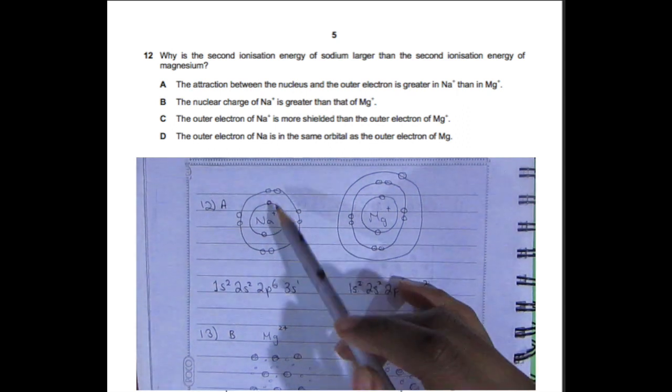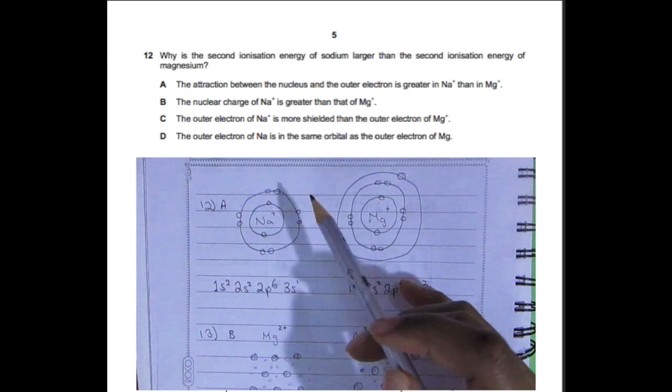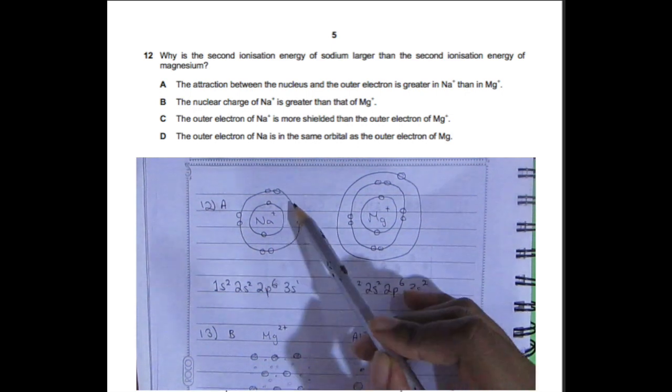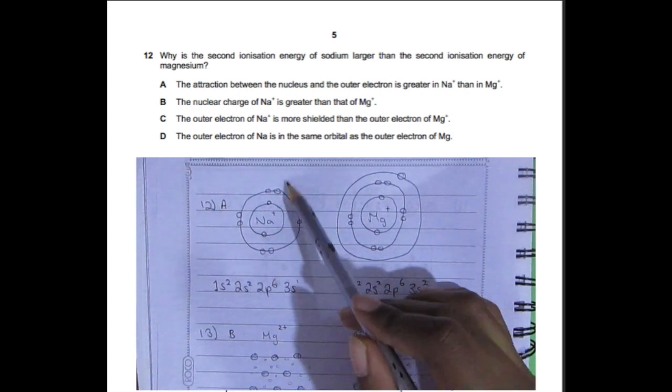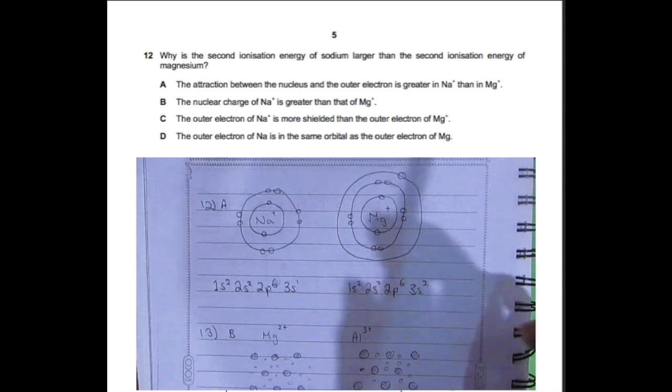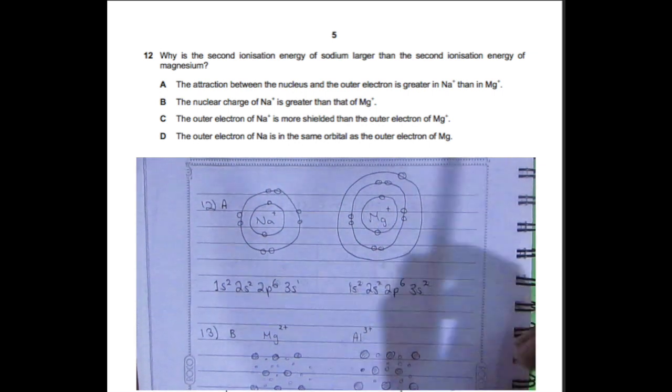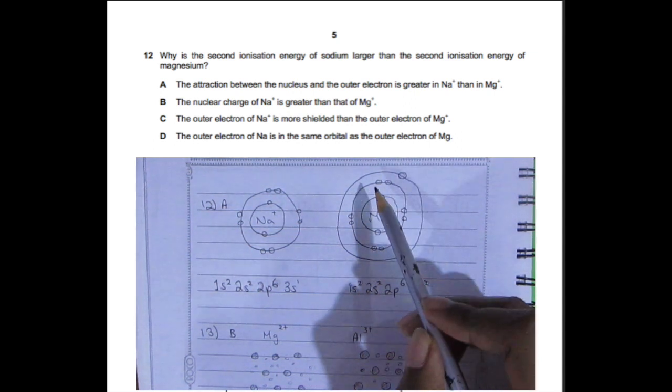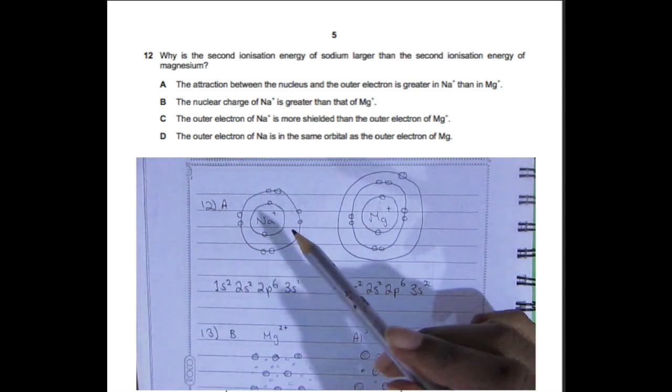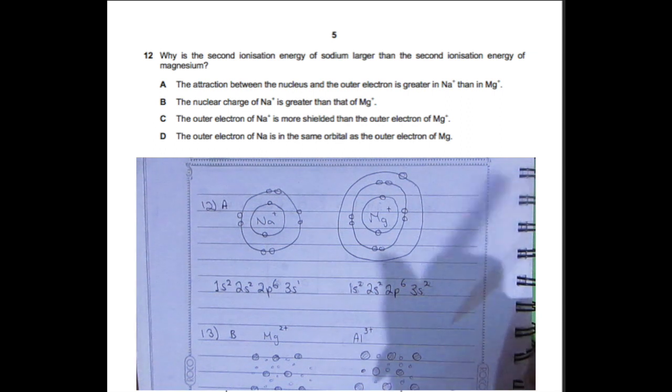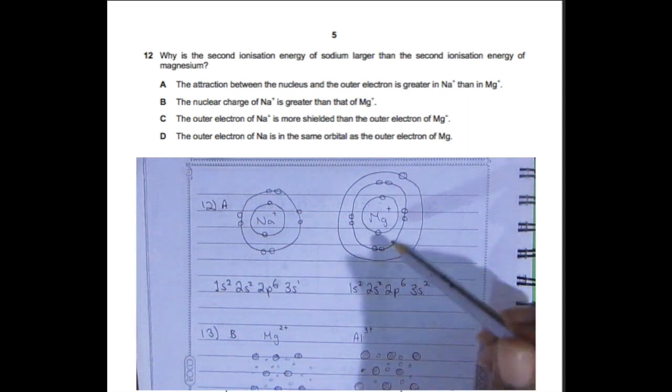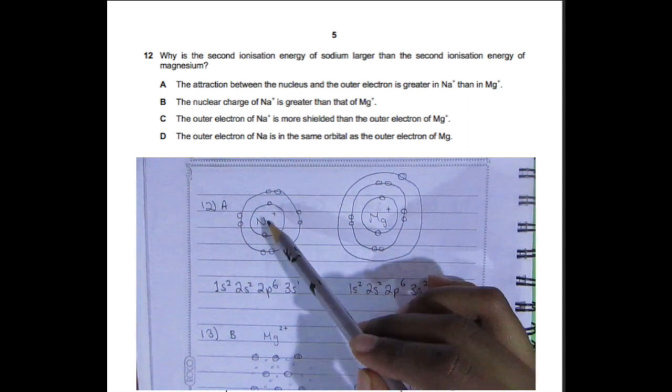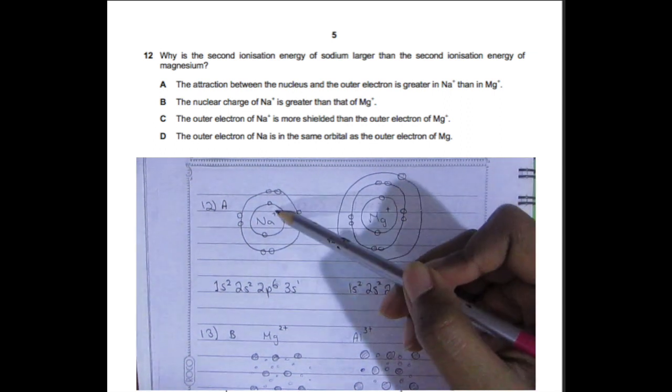Question 12: Why is the second ionization energy of sodium larger than the second ionization energy of magnesium? The answer is A. The attraction between the nucleus and the outer electrons is greater in sodium plus than in magnesium plus. Sodium has 11 electrons and because it's in group one has one valence electron, and we already lost that.